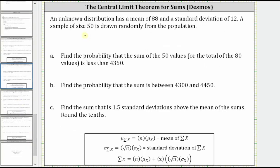Going back to our example, let's begin by determining the mean of the sums as well as the standard deviation of the sums. We will indicate the mean of the sums as mu sub sum of x, which is equal to n, the sample size of 50, times the mean of the original distribution, which is 88. 50 times 88 is equal to 4,400.